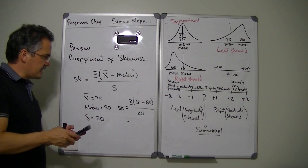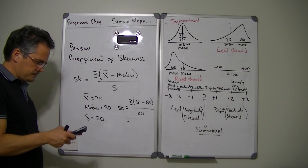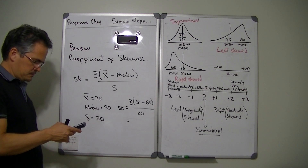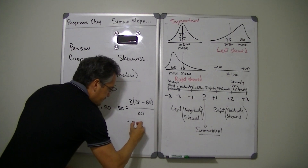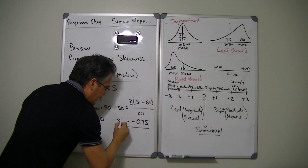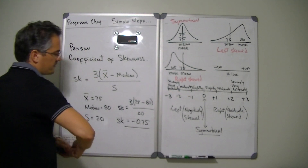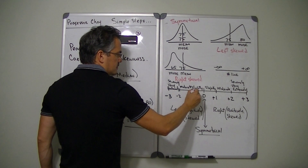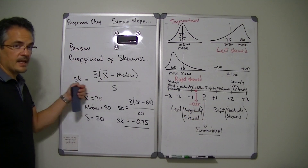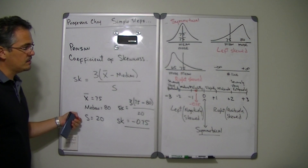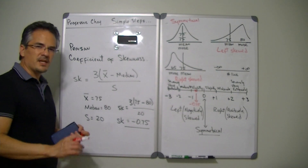Using a calculator, that gives us negative 0.75. That's our Pearson coefficient of skewness. A value of negative 0.75 falls close to zero on the negative side of the scale. So for this data set — with mean 75, median 80, and standard deviation 20 — we can say the data is slightly left skewed, or very close to symmetrical, but not quite symmetrical.